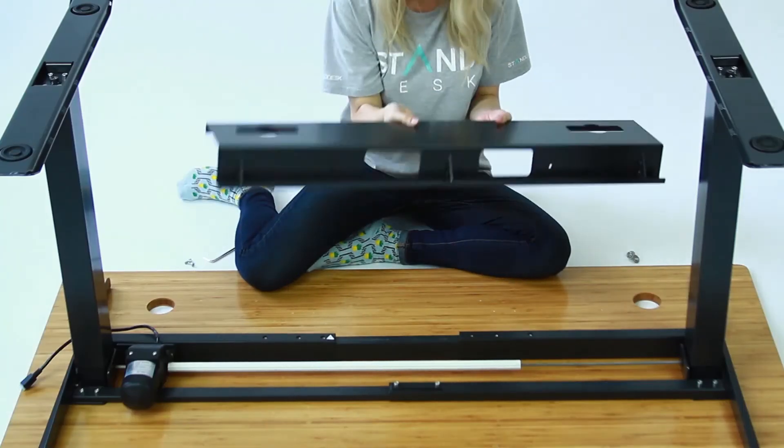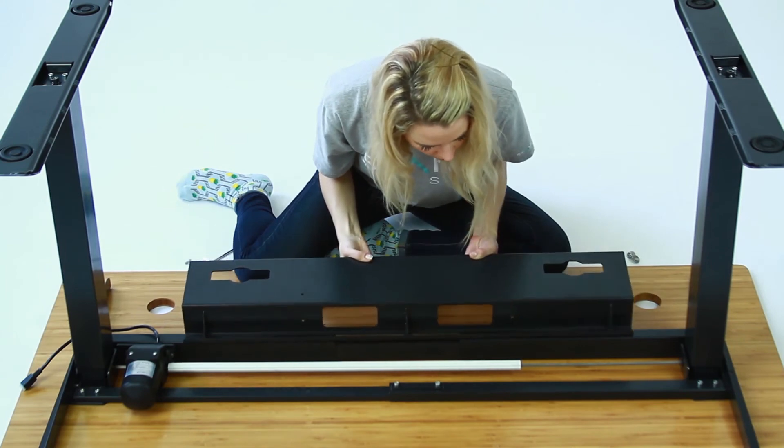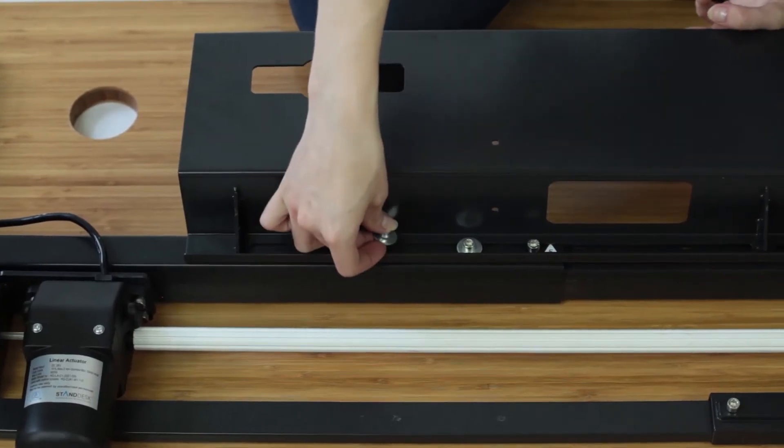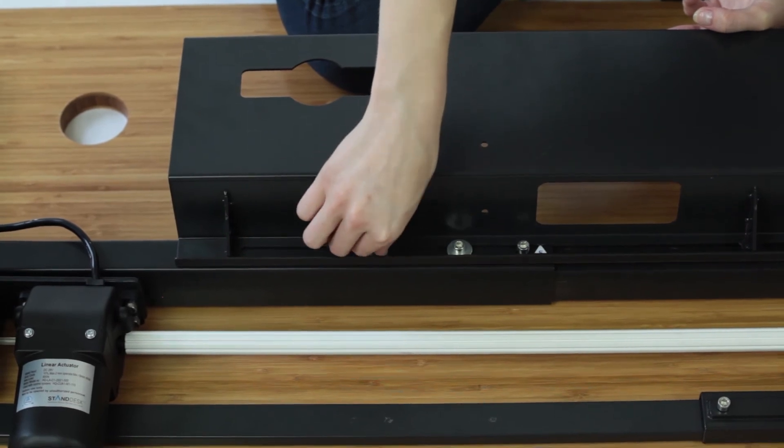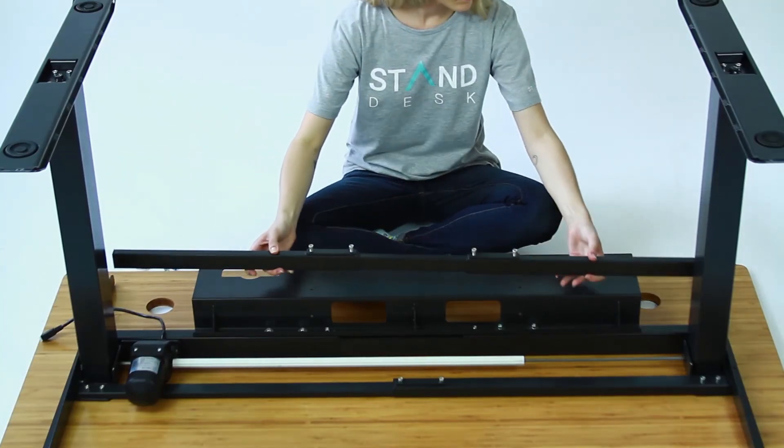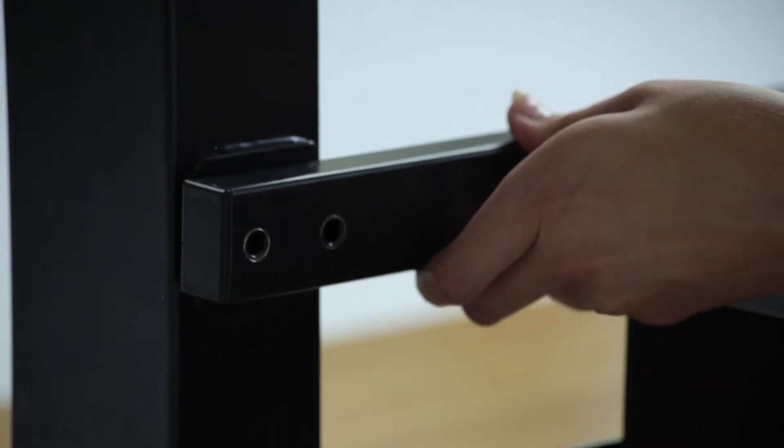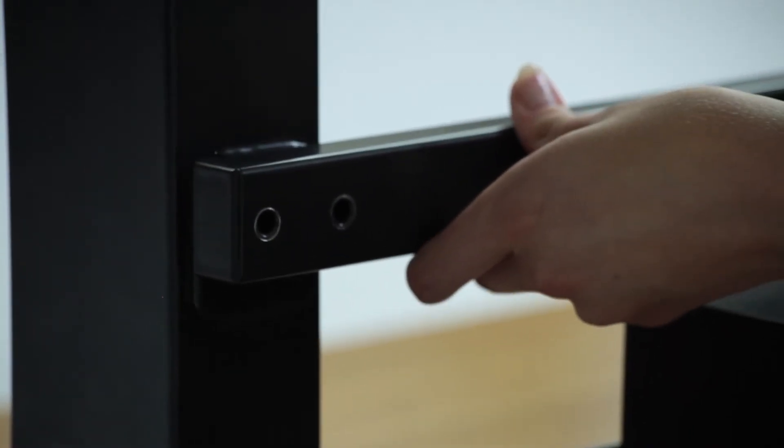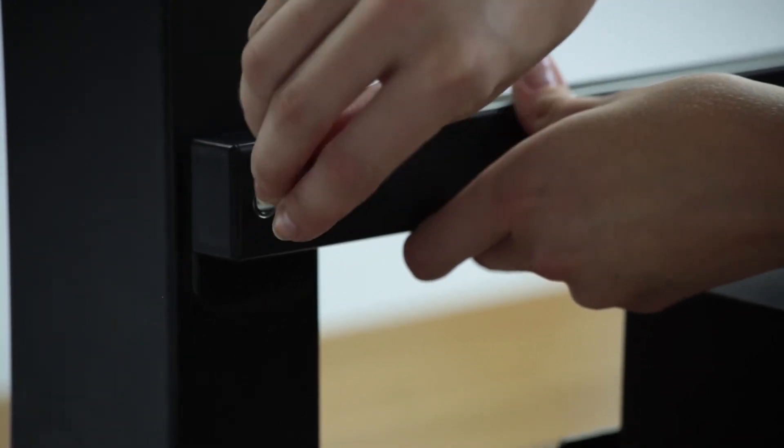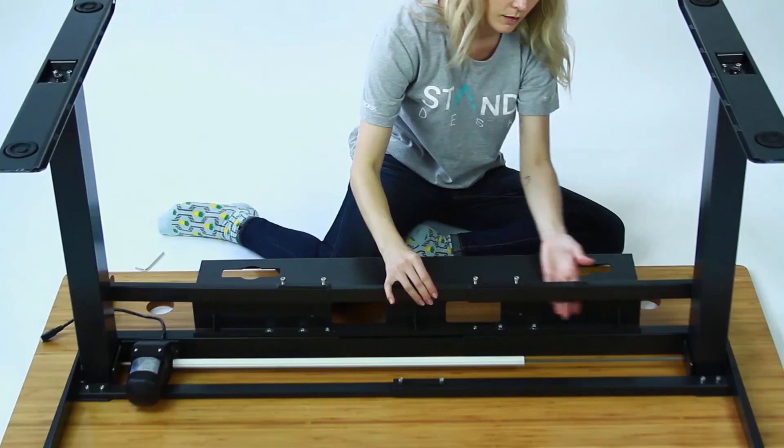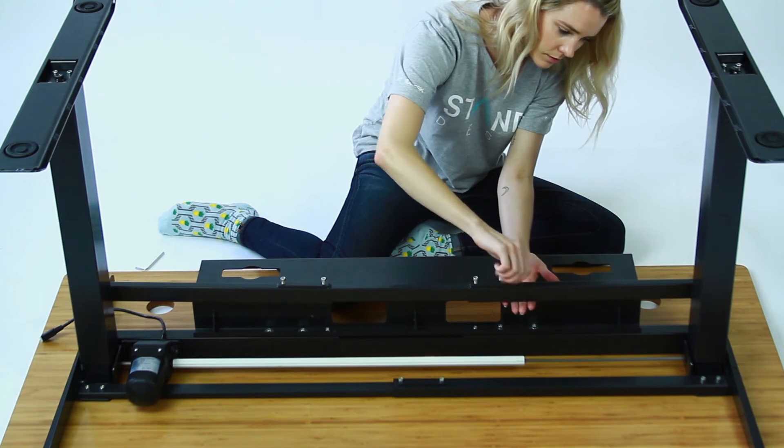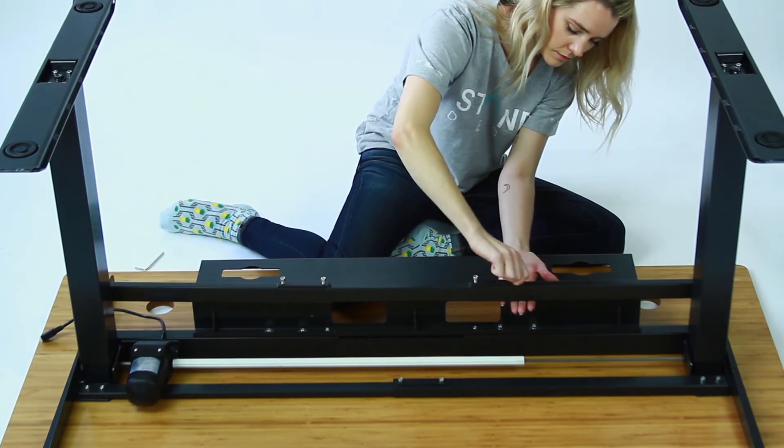If you've purchased the optional cable management tray attach that to the back middle slat using four M6 by 12 bolts and washers. If you've purchased the optional crossbar now you're going to attach that to the holes on the back of the legs. Do this with four M6 by 25 bolts and make sure the bolt holes in the middle of the crossbar are facing up. You might have to loosen these to adjust the width so they match up to the holes on each leg.